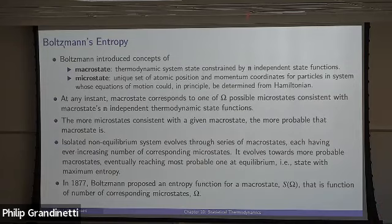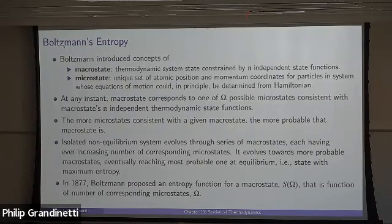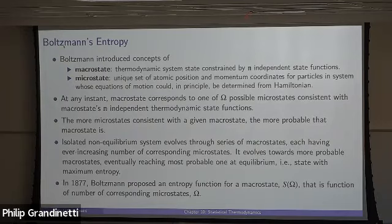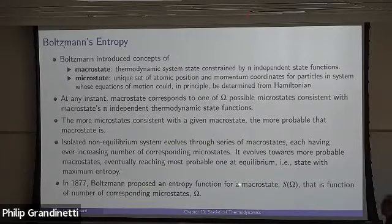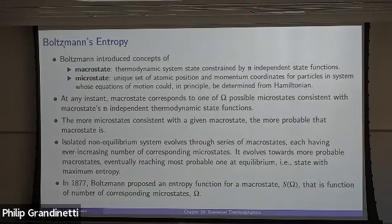What Boltzmann was thinking was that the system, as it evolves to greater and greater entropy, is evolving to macrostates which have a larger number of microstates consistent with them. When you think about a gas expanding, the original gas had maybe 10²³ microstates, but as it expanded it might have gone to 10²⁴ and 10²⁵ microstates. So there is an entropy function for a given macrostate which depends upon the number of microstates that maps to that macrostate.